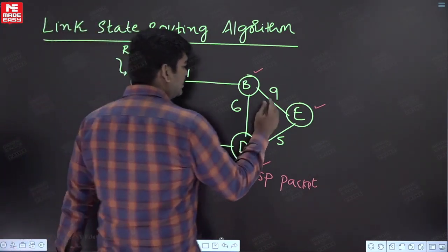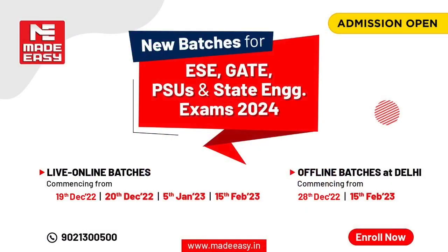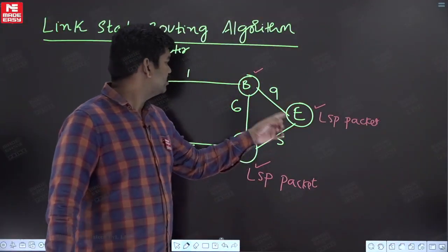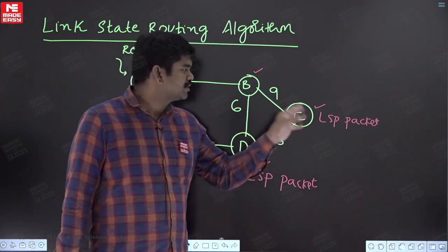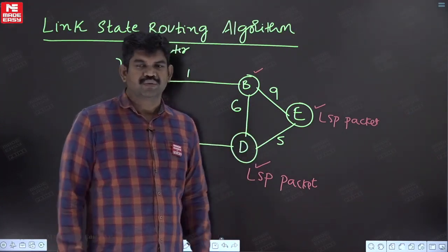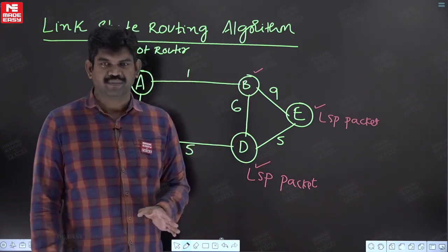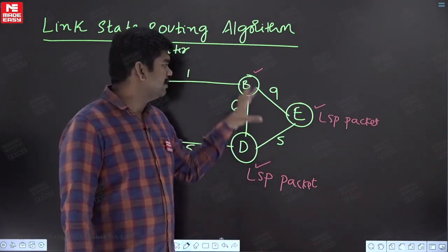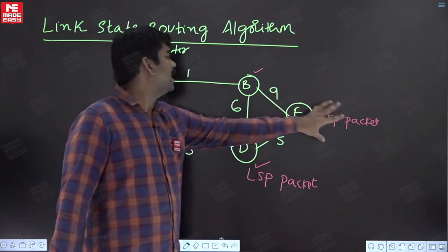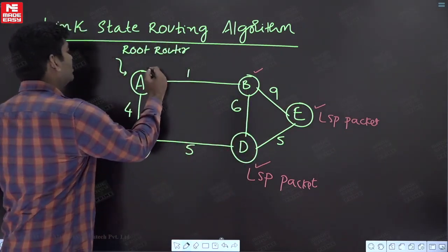Similarly, router E will also have an LSP packet. E knows that it is connected to B with 9 units and to D as 5 units initially. So every router will have some basic information, and that information is treated as an LSP packet. Every router gives that LSP packet to the root router A.